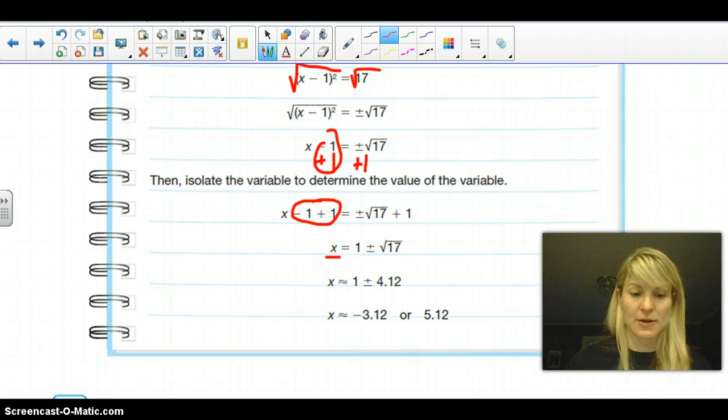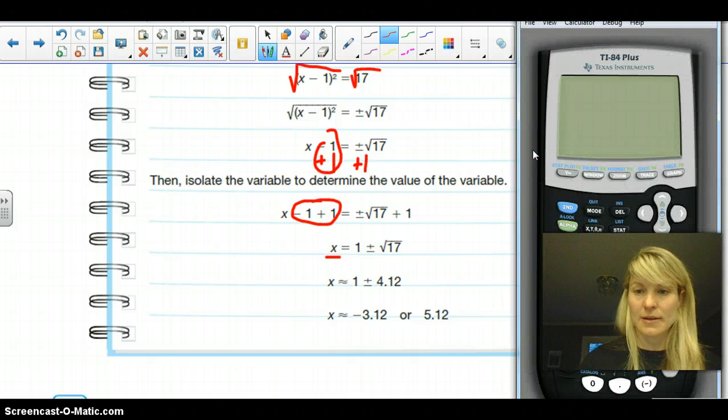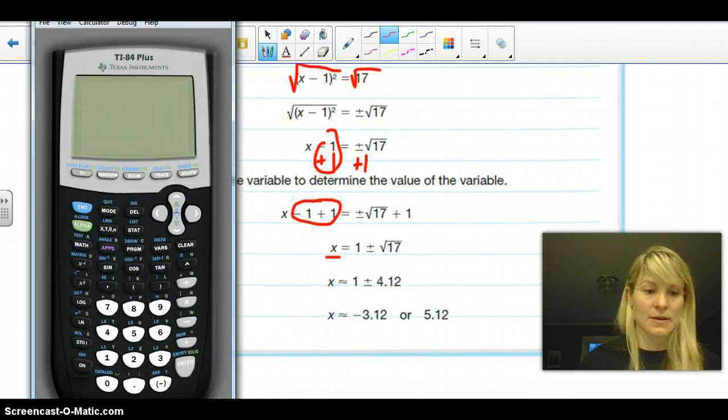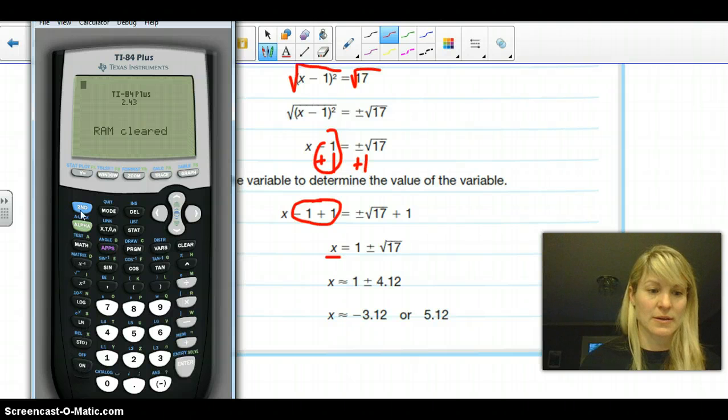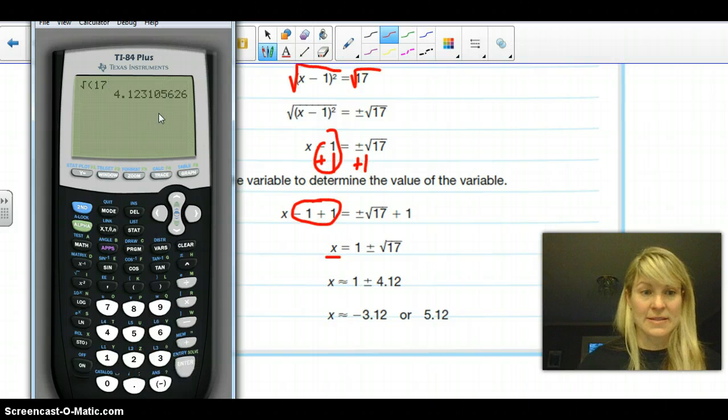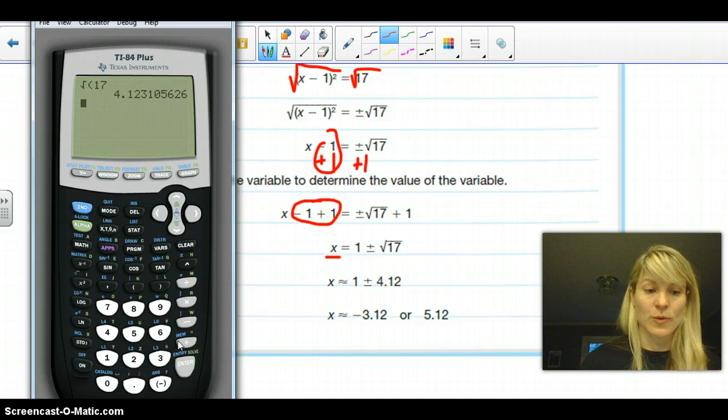And here, they went ahead and took their calculator, and they put in the square root of 17, which they got this, and they rounded to the tenths, and so they said 1 plus or minus that. So we're going to do it both ways.